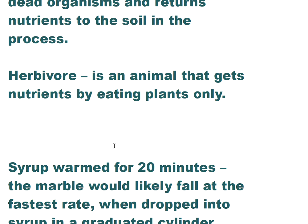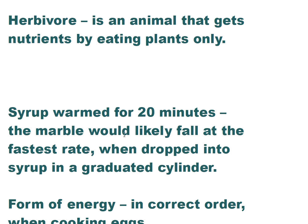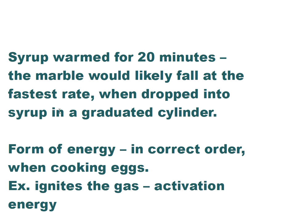A herbivore is an animal that gets nutrients by eating plants only, like large dinosaurs, cows, and goats. If syrup is warmed for 20 minutes, a marble would likely fall at the fastest rate when dropped into it in a graduated cylinder, because syrup becomes thinner when warm and thicker when cold.